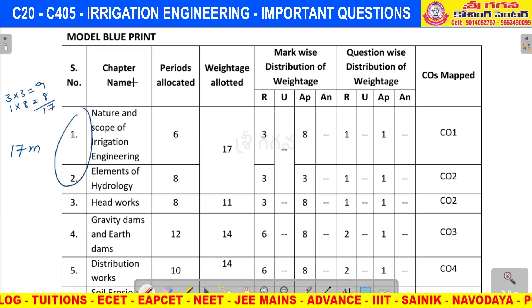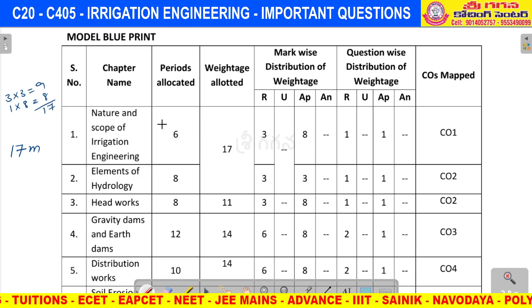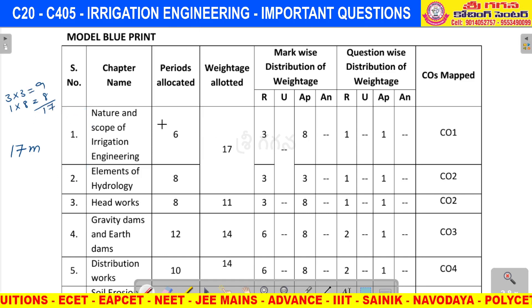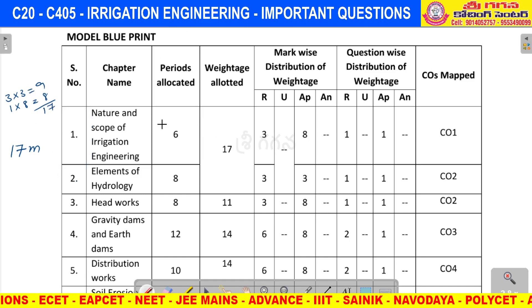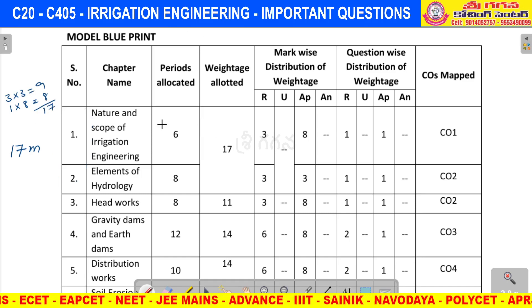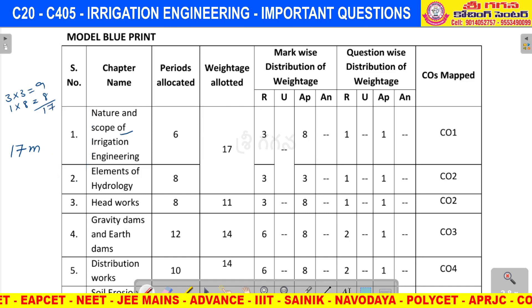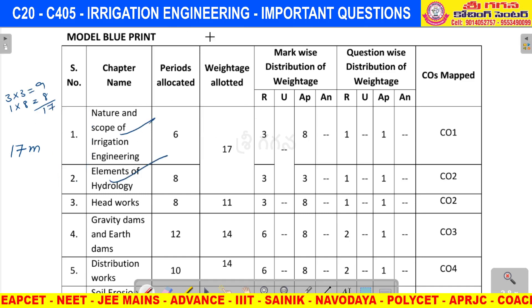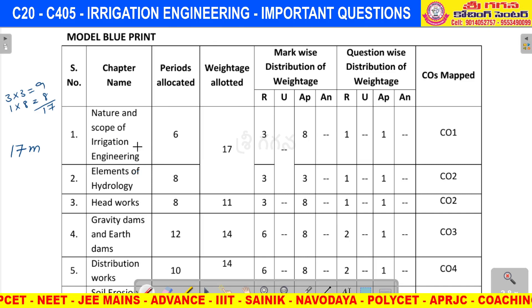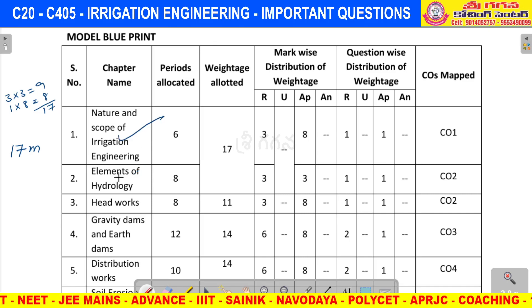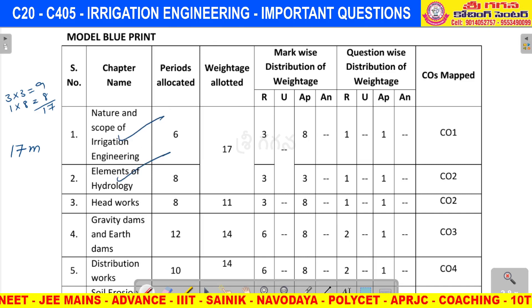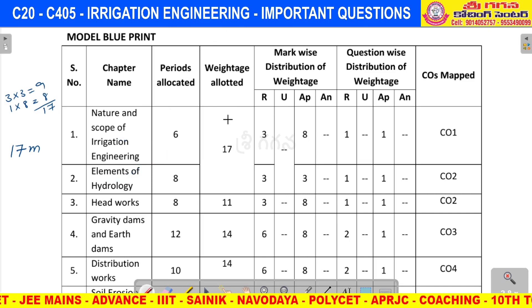These two units total 17 marks — 2 units will be 16 to 17 marks. We will have internal choice for the short answer (SA) questions.